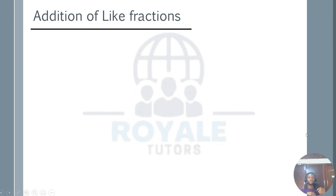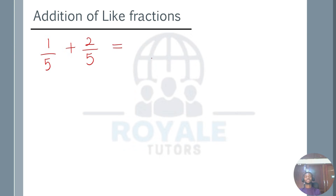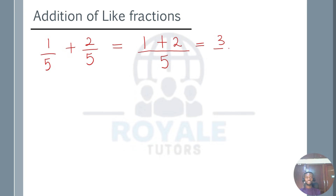Now let's look at addition of like fractions. Like fractions are fractions that have the same denominators. For example, 1 over 5 plus 2 over 5 — these are like fractions. When you have like fractions, you add them by keeping the common denominator and adding the numerators. Since the denominator is 5 in both, we pick 5 as the denominator. Then we deal with the numerator: 1 plus 2 gives us 3 over 5.